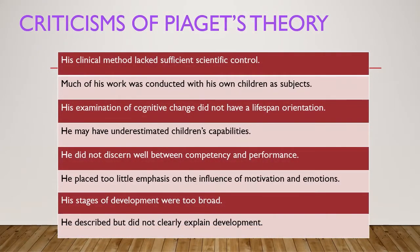These are the criticisms of Piaget's theory. First, his clinical method lacked sufficient scientific control. Second, much of his work was conducted with his own children as subjects. Third, his examination of cognitive change did not have a lifespan orientation. He may have underestimated children's capabilities and did not discern well between competency and performance. He placed too little emphasis on the influence of motivation and emotions. His stages of development were too broad, and lastly, he described but did not clearly explain development.